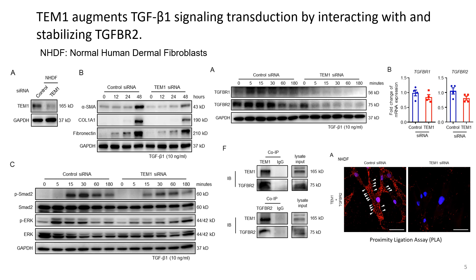So Thiamin silencing can reduce TGF-beta receptor-1 and receptor-2 protein expression, but doesn't affect TGF-beta receptor-1 and receptor-2 messenger RNA levels. So the CoIP and PLA assay confirm that Thiamin can interact with TGF-beta receptor-2.